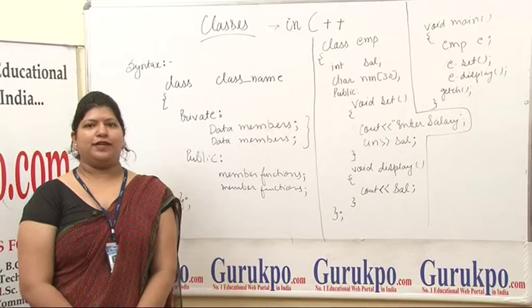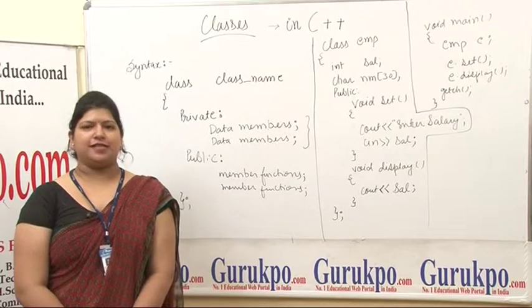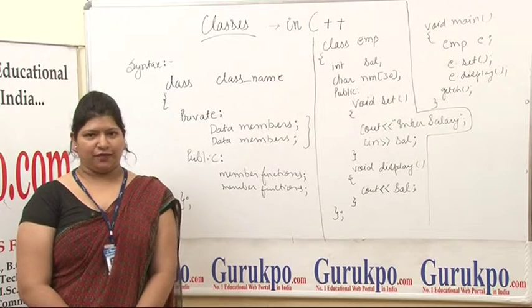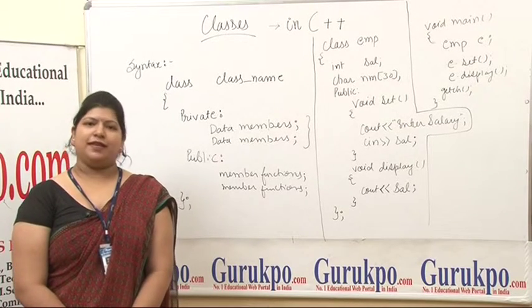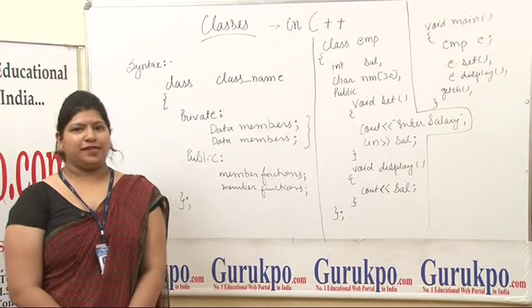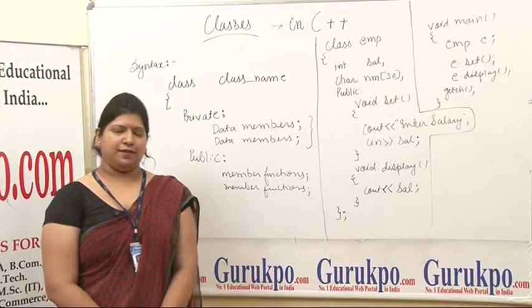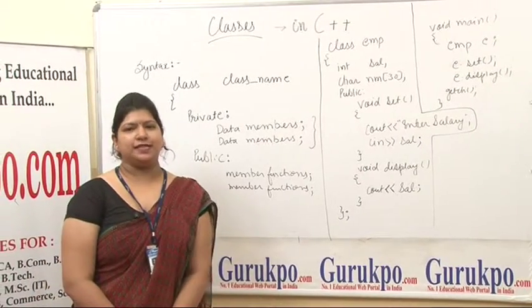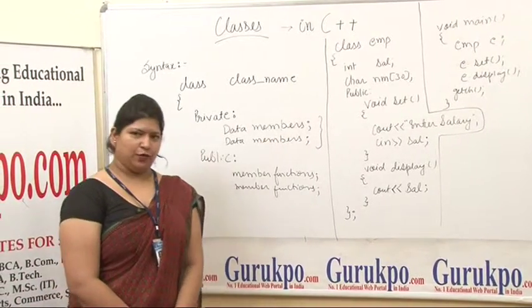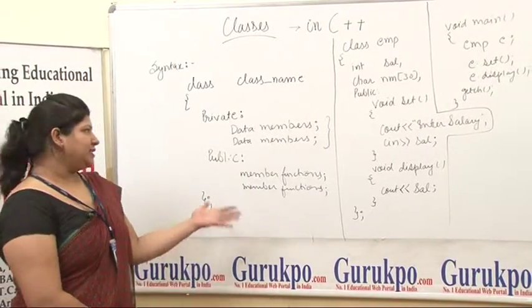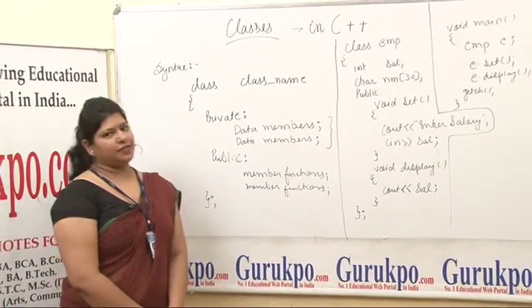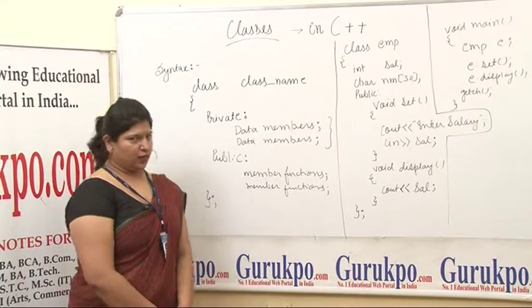As we all know, C++ is an extension of C, but classes are missing in C. Classes are a feature in C++ which makes it different from C. Now let us understand how classes work.